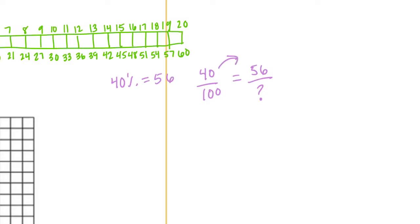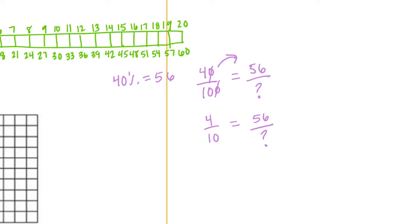Now there's not an easy way for me to get to 56, so I'm going to do some reducing. These two zeros can cancel out and I can get 4 tenths is equal to 56 out of something. I'm going to do 56 divided by 4. So 4 goes into 5 one time, 4 goes into 16 four times. So it goes in 14 times. So we can multiply by 14 to get 56, which means if we multiply 10 by 14, we'll get 140.